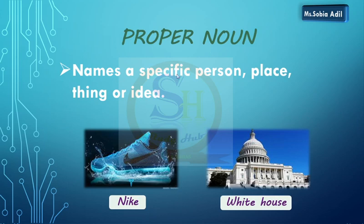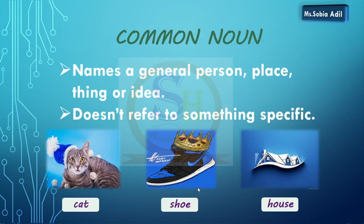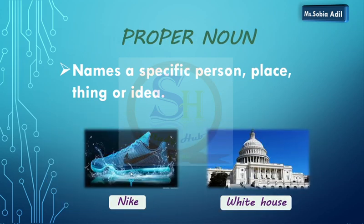A proper noun names a specific person, place, thing or idea. Ab ye kisi specific person, place or idea ke liye hum jo noun — yani name — istamal karte hain, that is called a proper noun. For example, a shoe is common but Nike is a brand — iska specific name hai Nike. Similarly, this is not just any house — this is actually the White House. So White House is a proper noun kyunki yeh specific jaga ke liye istamal ho raha hai.